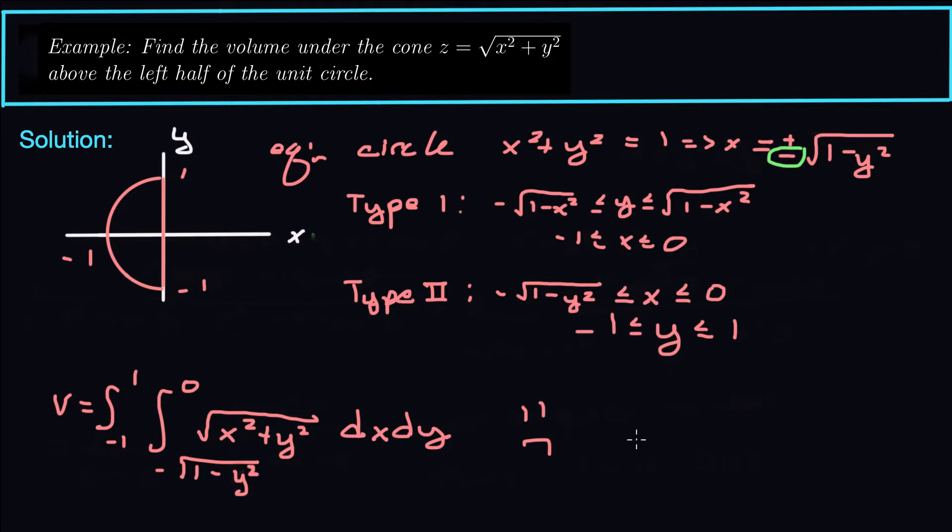That's our motivation for using polar coordinates. How do we use polar coordinates to do this integral instead of Cartesian coordinates? We'll come back to this example after we get through polar coordinates. What about polar coordinates makes this easier? We've got to figure out what it means to do a double integral in polar coordinates.